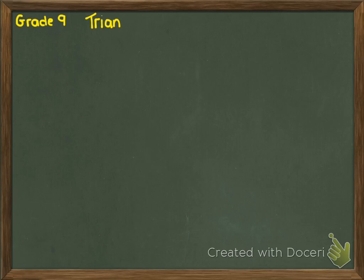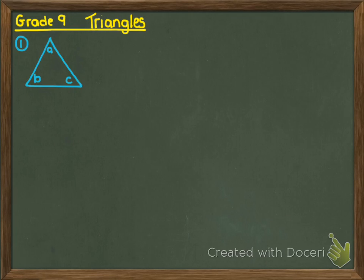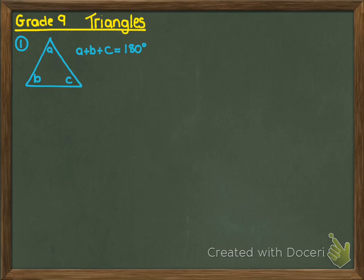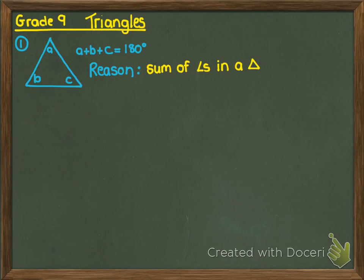Hi guys, today we're going to learn about triangles. A triangle is a three-sided shape and therefore it has three angles. The first rule we need to know is that the three angles in a triangle will add to 180 degrees. The geometry reason we're going to use when we use this statement is: sum of angles in a triangle.